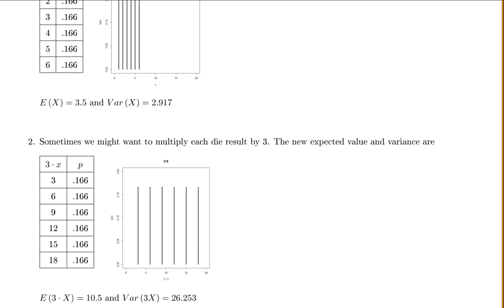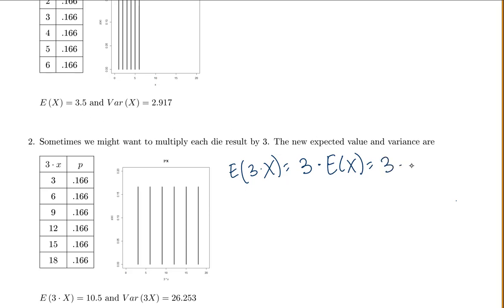We have a new expected value and variance — let's figure out how they were derived. The expected value of 3 times x would just be 3 times the expected value of x. So 3 times the old expected value of 3.5 gives 10.5. That makes sense: if you multiply everything by 3, your average is just multiplied by 3 as well.